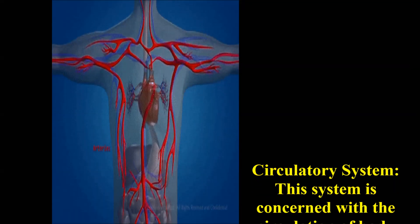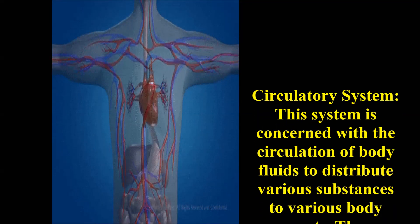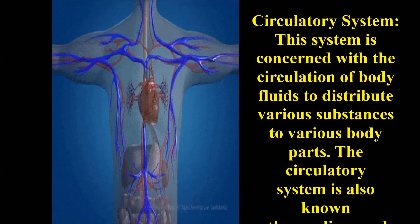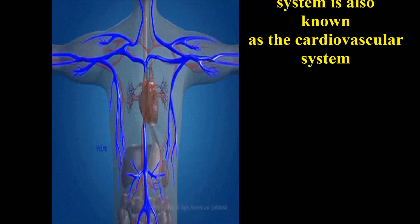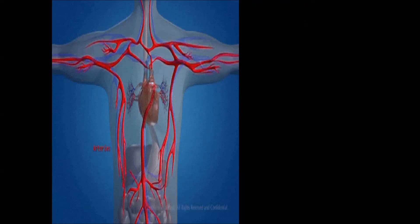The circulatory system is concerned with the circulation of body fluids to distribute various substances to various body parts. The circulatory system is also known as the cardiovascular system.